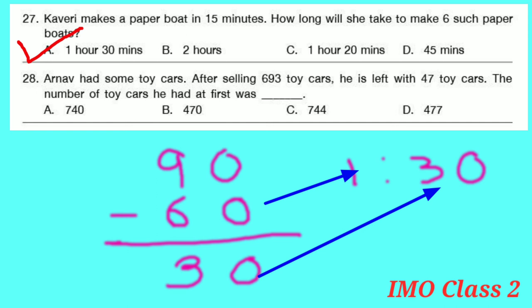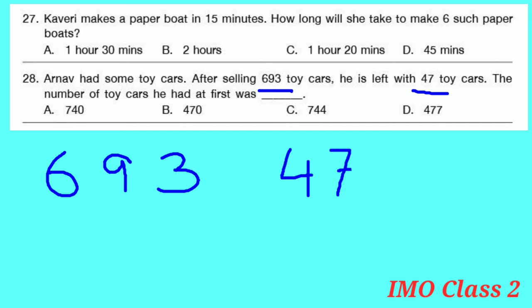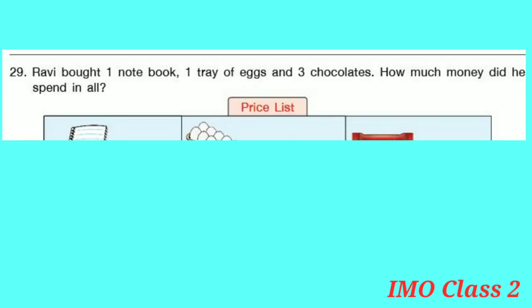Question number 28: Arnav had some toy cars. After selling 693 toy cars, he was left with 47. The number of toy cars he had at first was dash. Toy cars sold: 693. Toy cars left: 47. Adding both: 693 + 47 = 740. So the correct option is A — he had 740 toy cars at first.